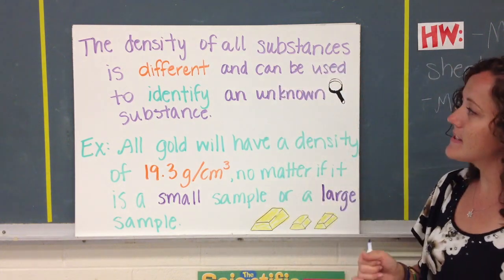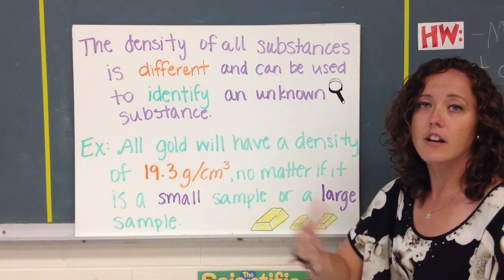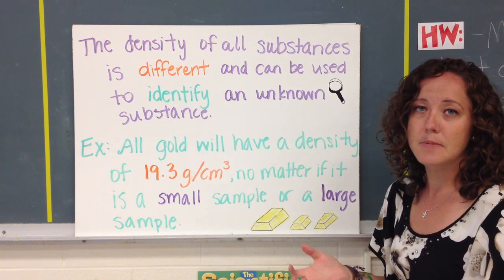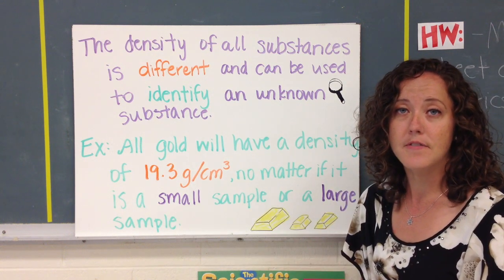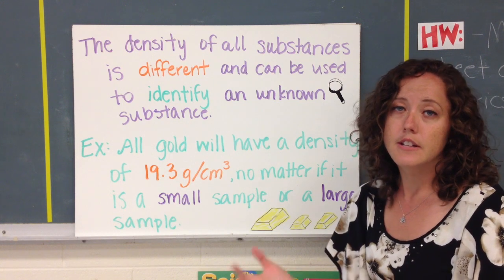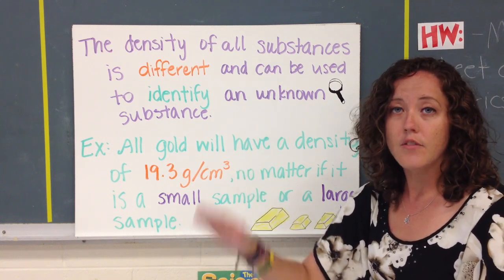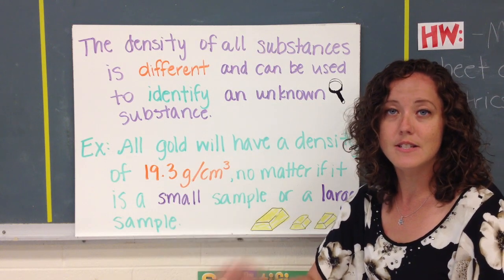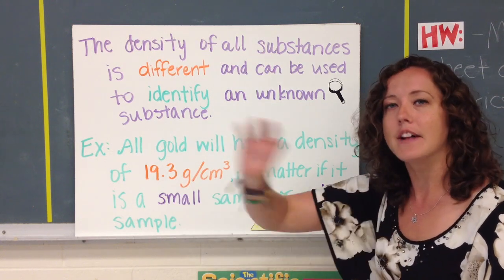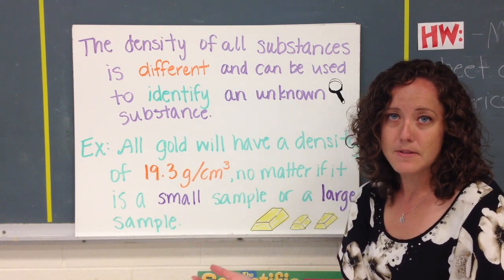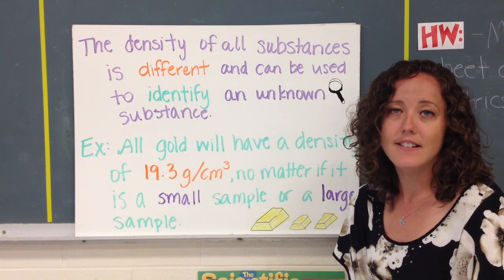Okay, so the density of all substances is actually different depending on the substance that it is. So this can be used to identify an unknown substance. So say you're given an example where you have to find the mass and volume. You do your calculations, you figure out what density is, and you have a chart of all the known substances and their densities. You can take what you calculated and match it up to the substances and find out what the substance is. So you're going to have practice with that tonight.